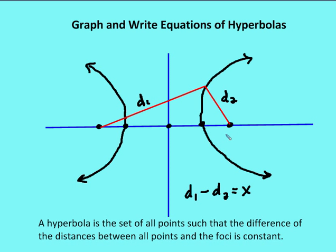The definition of a hyperbola is a set of all points such that the difference of the distances between all points and the foci is going to be constant. So if I take d1 — calling this focus 1 and this focus 2 — the difference between d1 and d2 is constant as I graph the set of points which are called the hyperbola. We call each of these hyperbola segments branches.